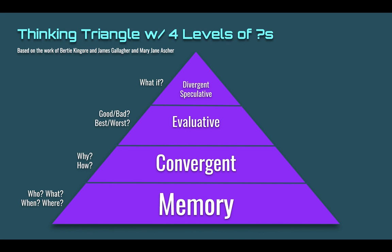The first thing to think about as we try to build more depth, breadth, and complexity into lesson plans for GT kids is something called a thinking triangle. I've mapped four levels of questions onto it. The thinking triangle concept was developed by Bertie Kingor, and the four levels of questioning were conceptualized by James Gallagher and Mary Jane Asher. The first level of questioning — not the worst level — is memory.